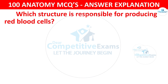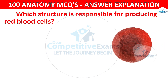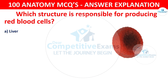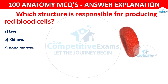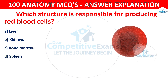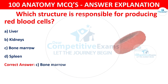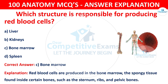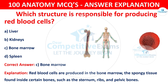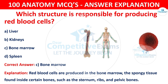Question number 93: Which structure is responsible for producing red blood cells (RBCs)? The options are: Liver, Kidneys, Bone marrow, or Spleen. The correct answer is C — bone marrow. Red blood cells are produced in the bone marrow, the spongy tissue found inside certain bones such as the sternum, ribs, and pelvic bones.